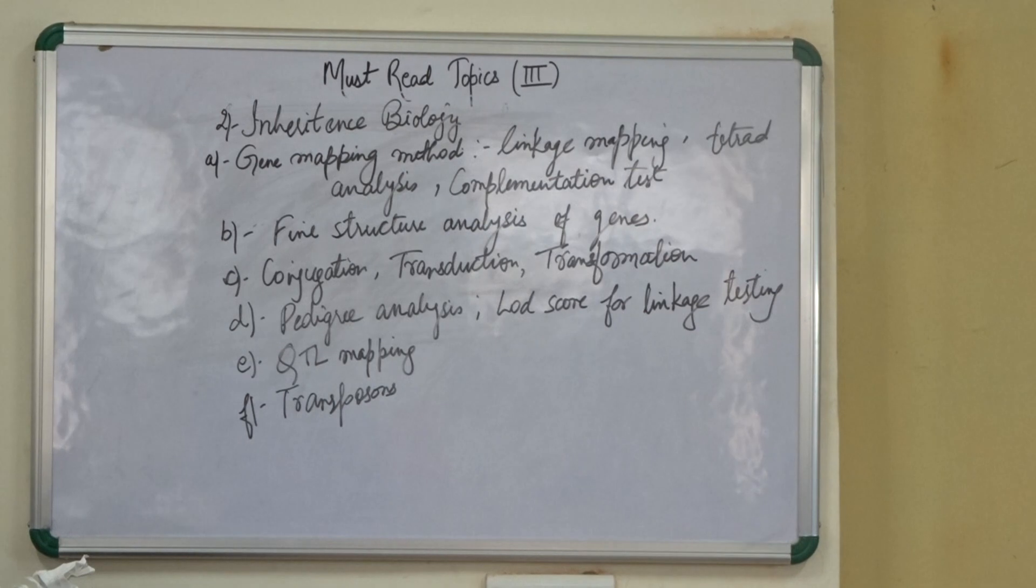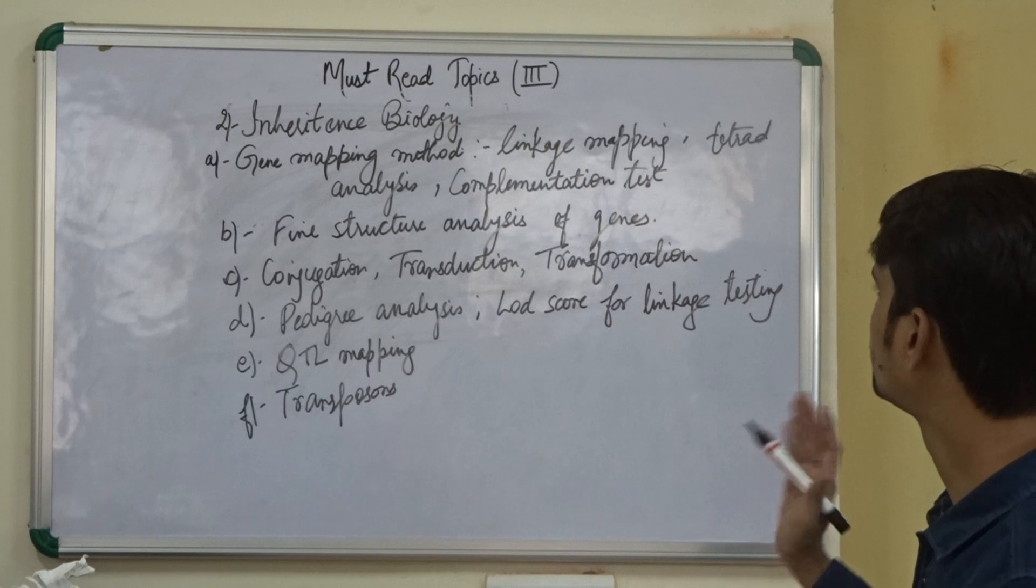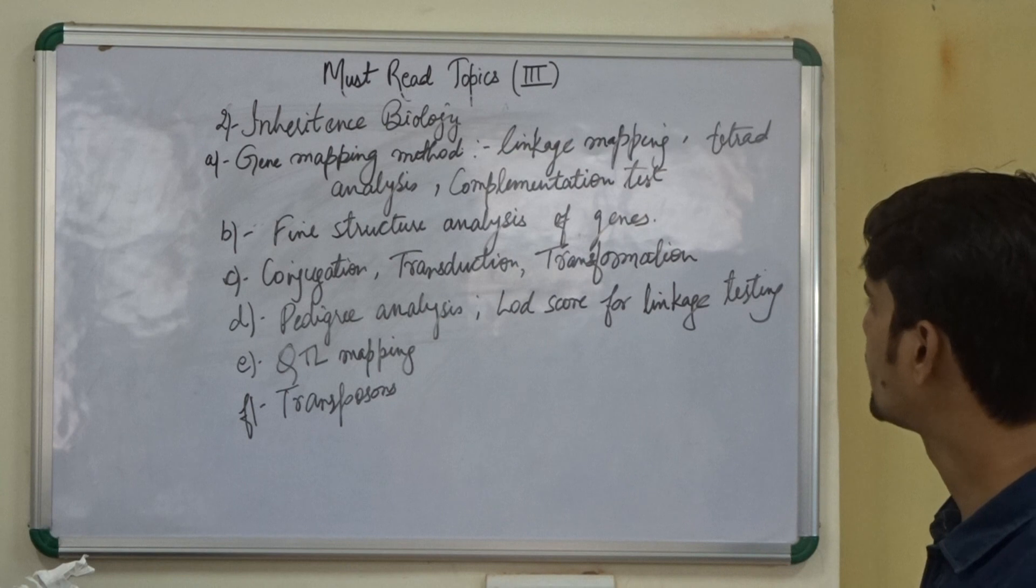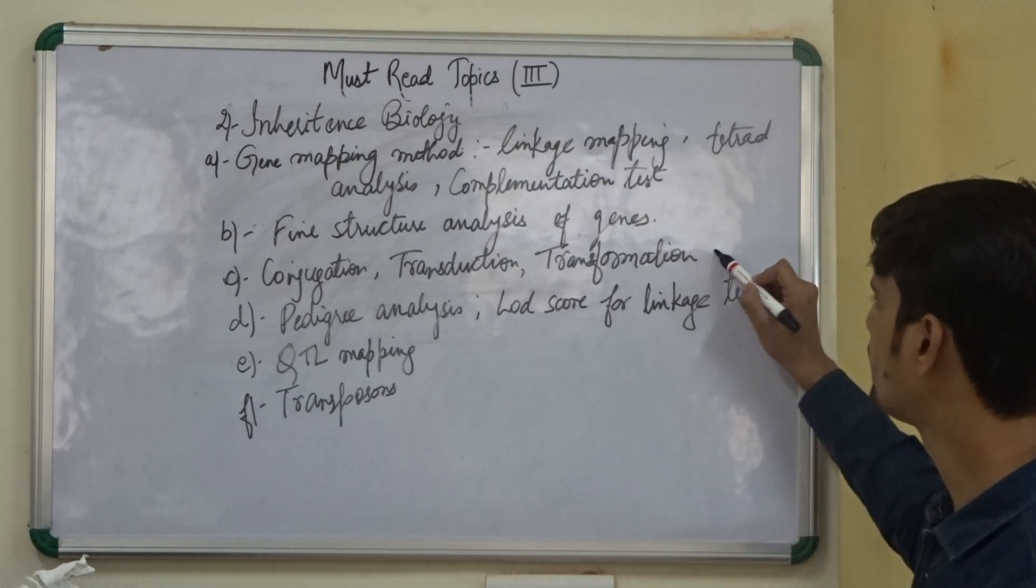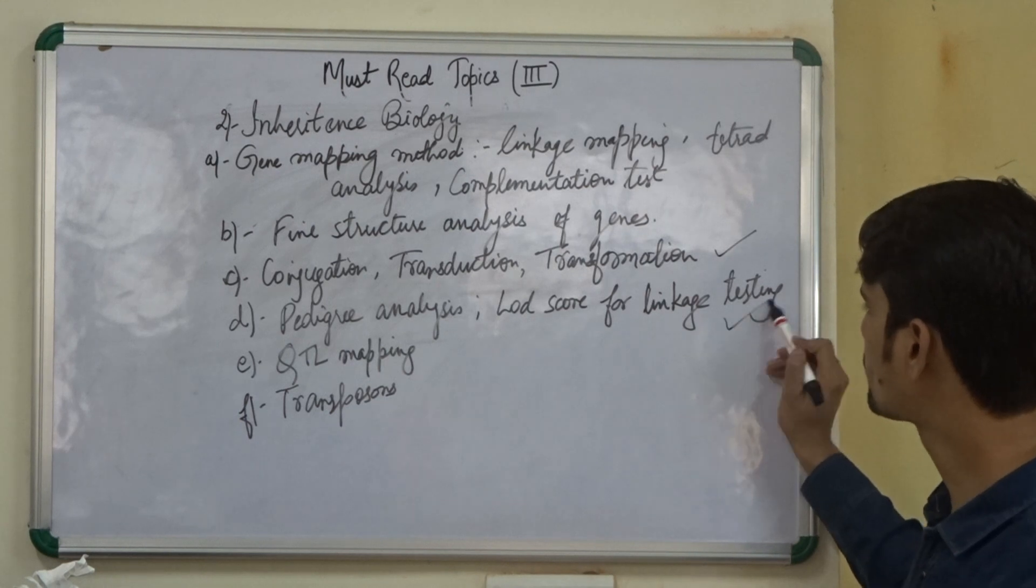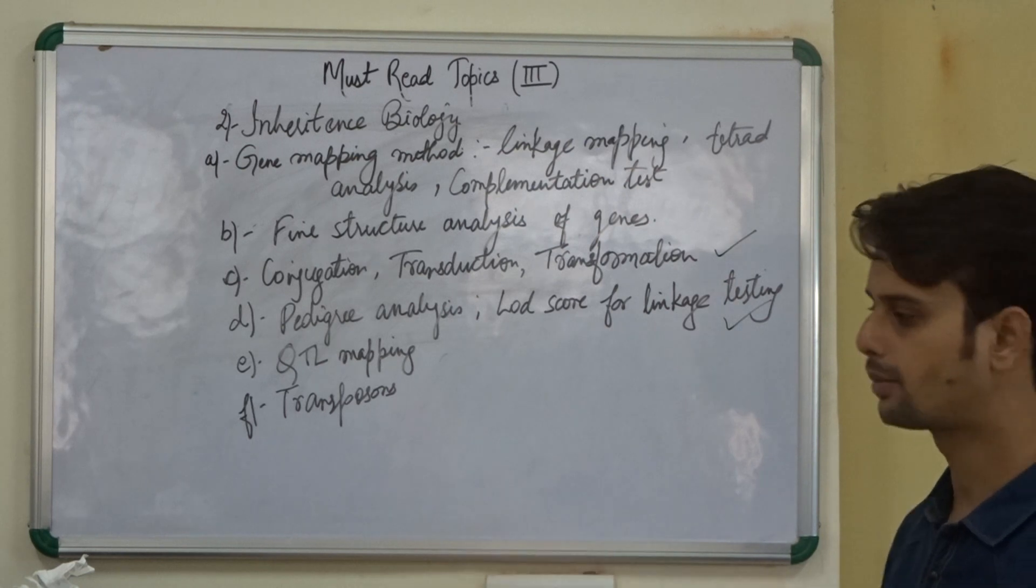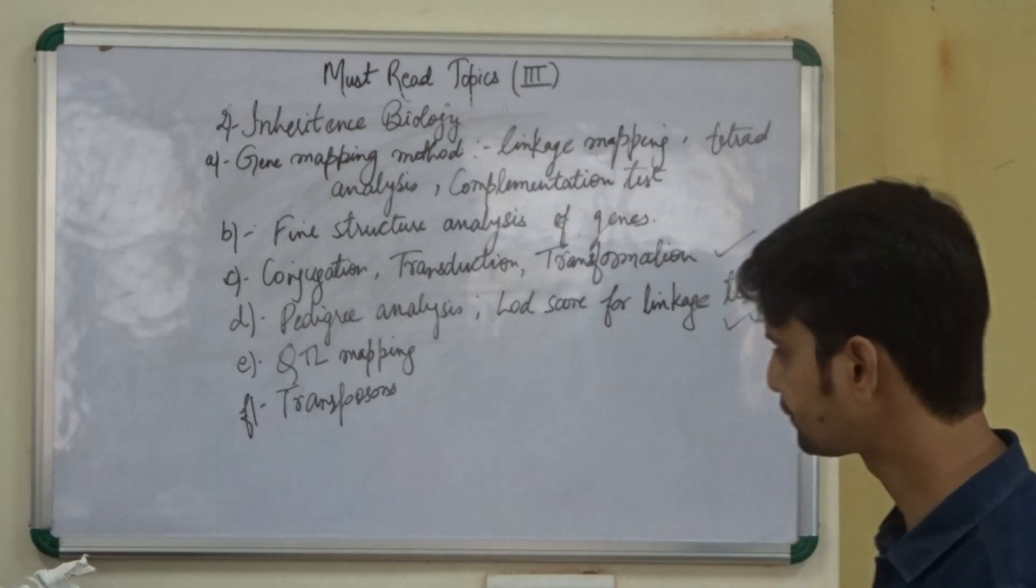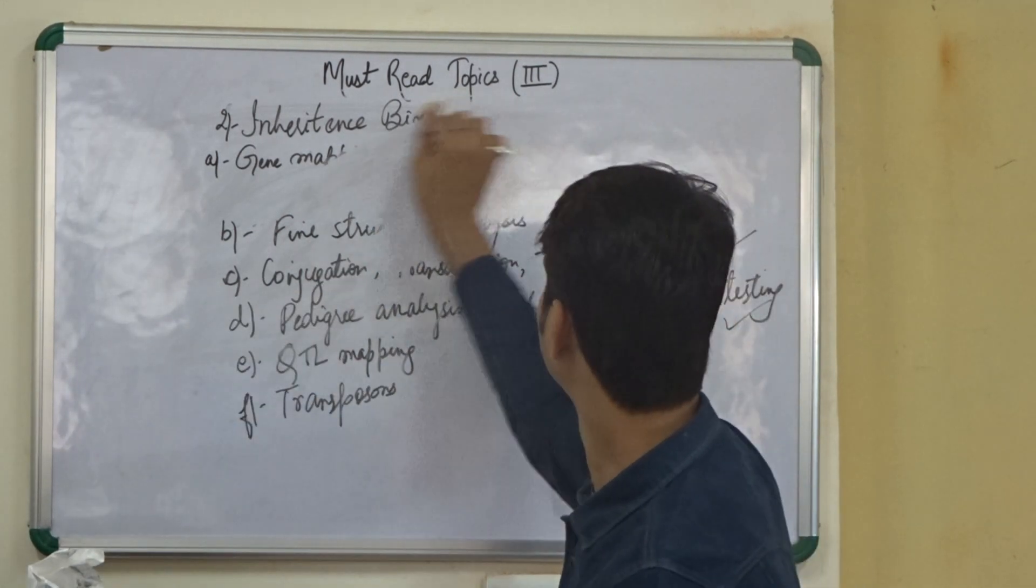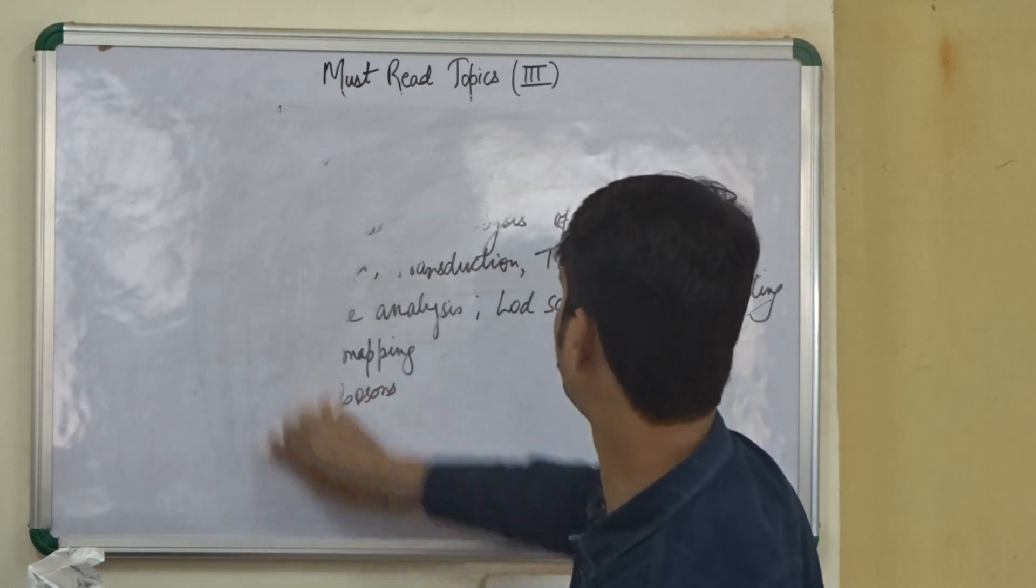So in this unit also we have selected 6 topics: the gene mapping methods, where we need to know about linkage mapping, tetrad analysis, complementation test. Then we have fine structure analysis of genes, then we have conjugation, transduction and transformation. We have pedigree analysis and LOD score for linkage testing. We have gene mapping and finally we have transposons. So this completes our second part.